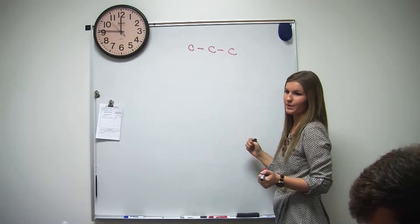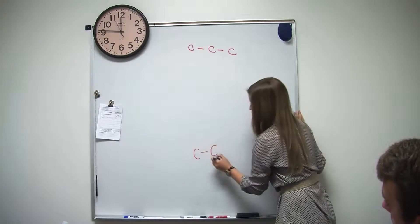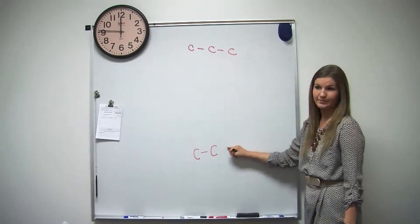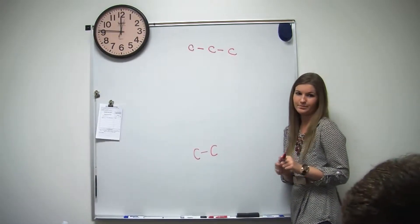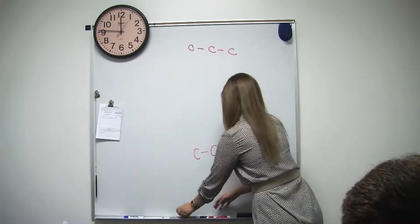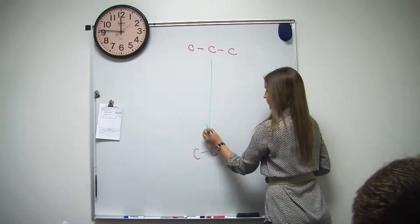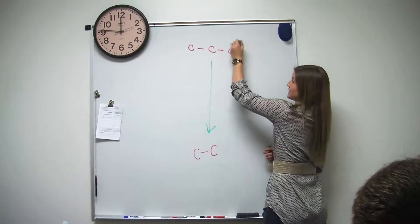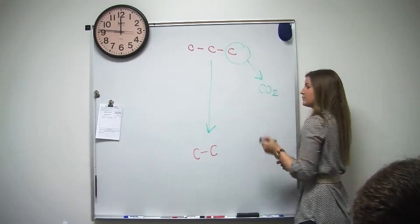What does acetyl-CoA look like? Two carbons. So we want to go from our pyruvate to acetyl-CoA. How do we do that? It's one step. I can't remember if you add a CO2, a carbon dioxide? We're actually going to take off a carbon to make CO2.